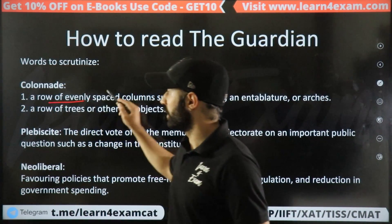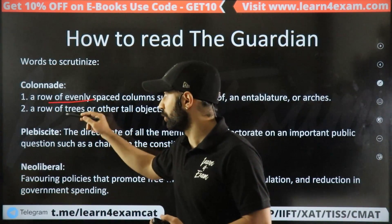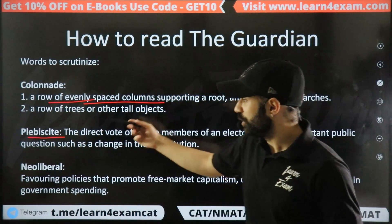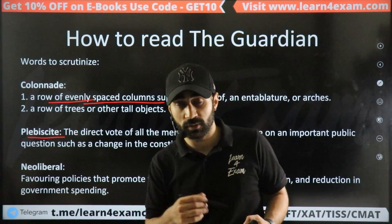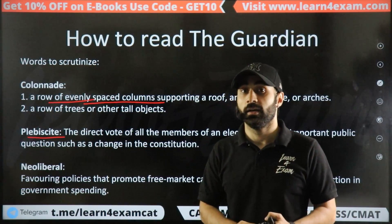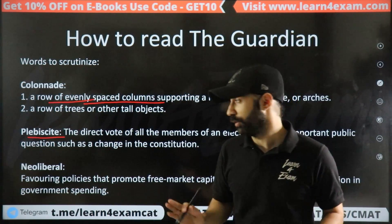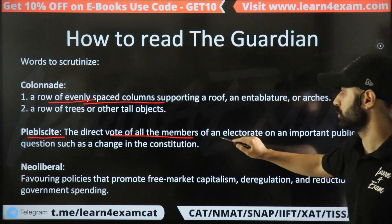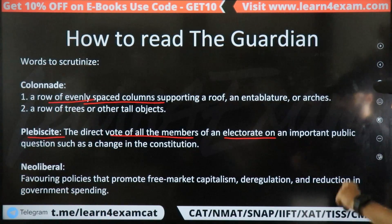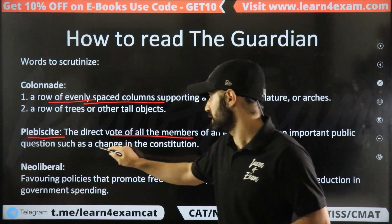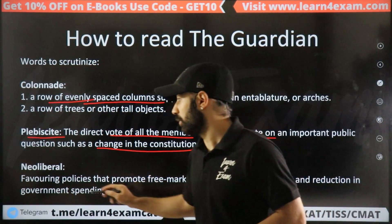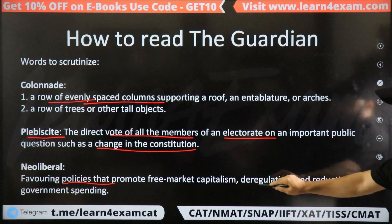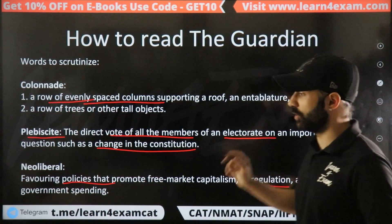Colonades means a row of evenly spaced columns or a row of trees. Plebiscite means the direct vote of all members of an electorate on an important public question, such as a change in the constitution. Neoliberal means favoring policies that promote free-market capitalism, deregulation, and reduction in government spending.